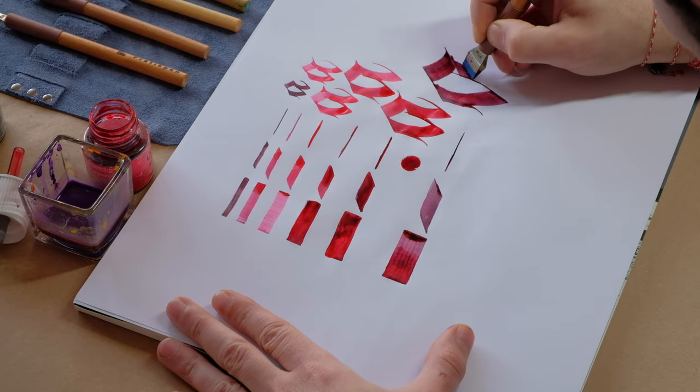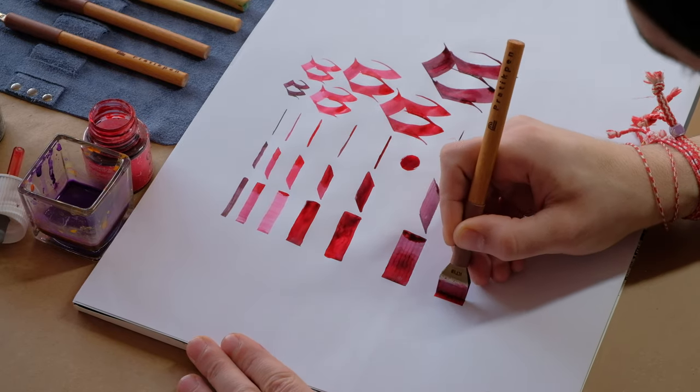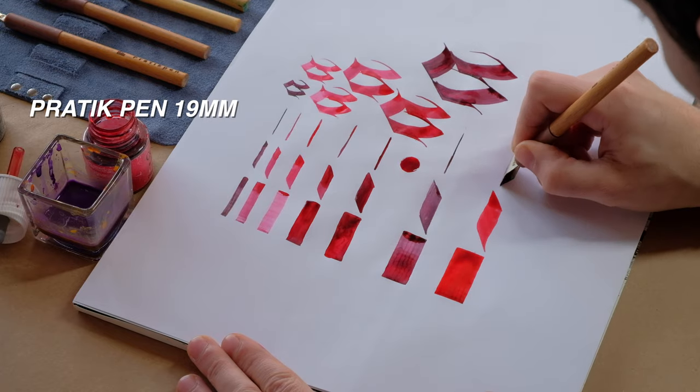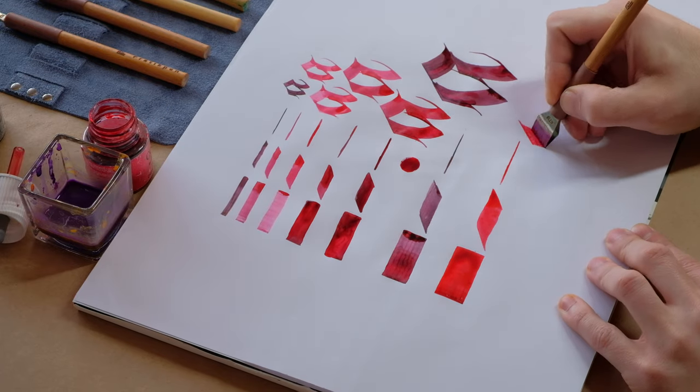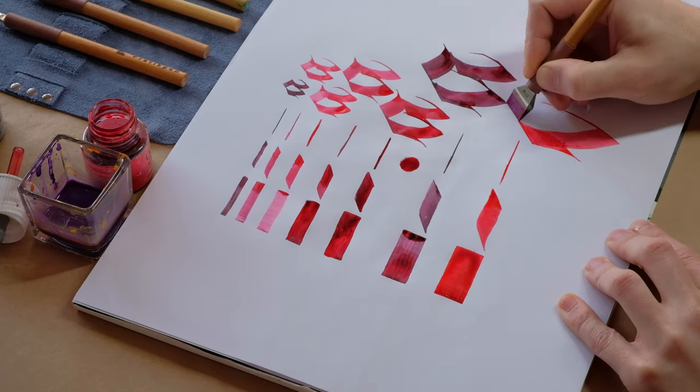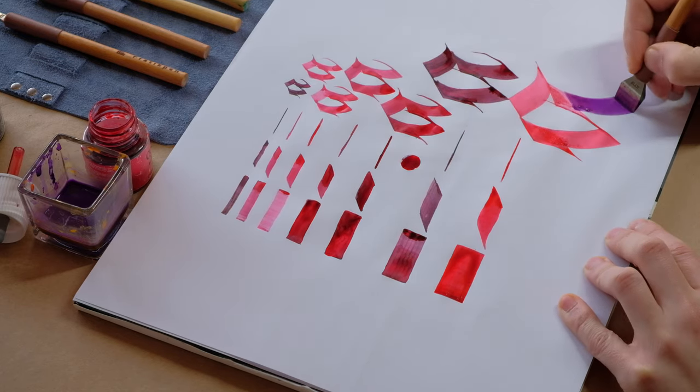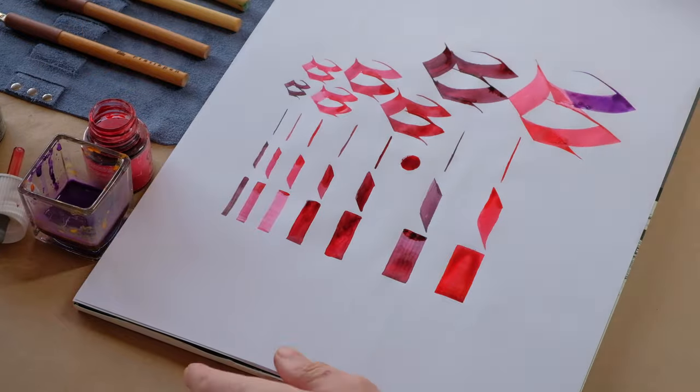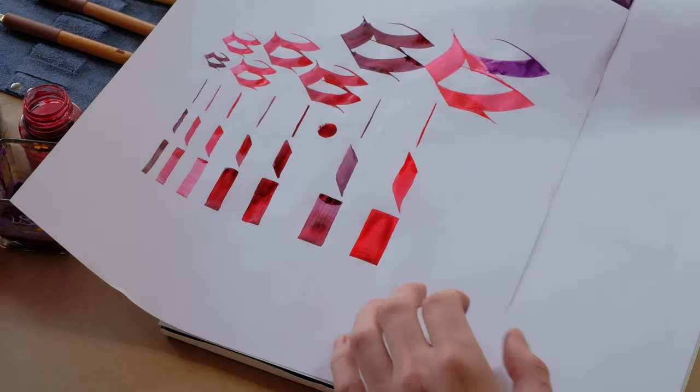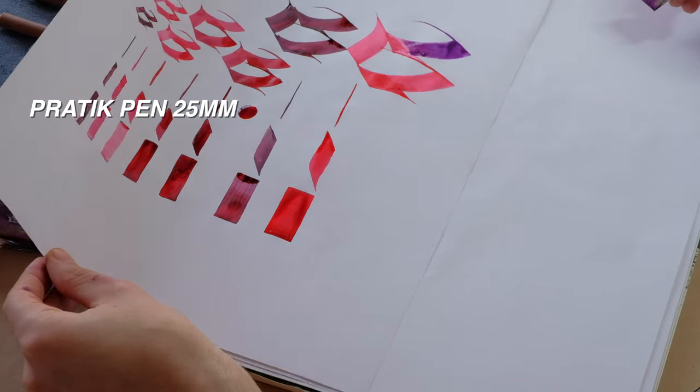Unlike the automatic pens, Pratik Pen writes better on one side of the tip where with automatic pens it is the same with both sides and you don't have this issue. This could be considered a minus but I don't think it's such a big deal and it's something that you can get used to.